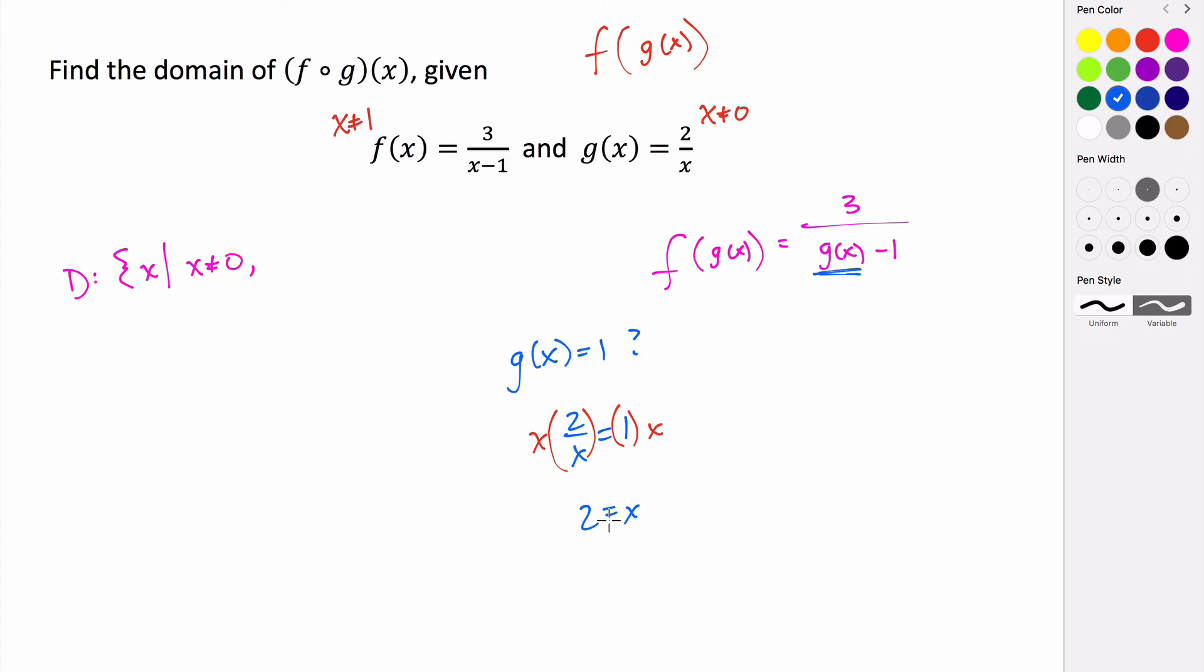Which means that x is not allowed to equal 2. Because if I plug 2 in, I get 2 over 2, which is 1. That means that my output would be 1. And if I plug my output into my function f, 1 minus 1 would be 0. So x is not allowed to equal 2. That is our second domain restriction.